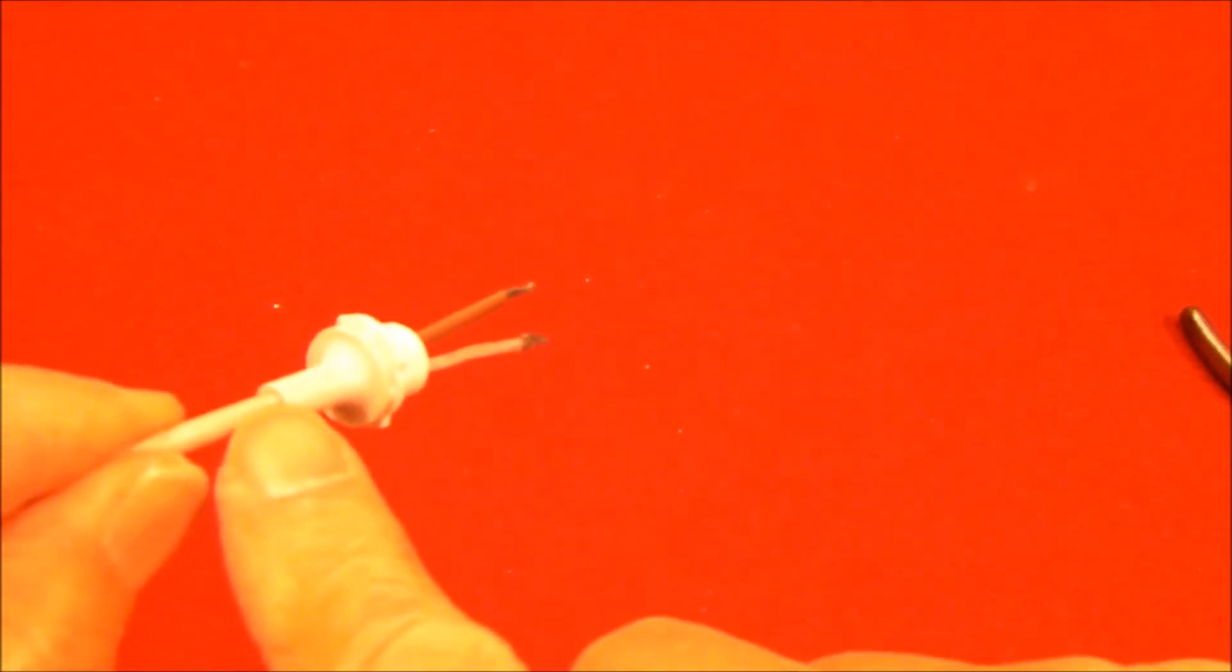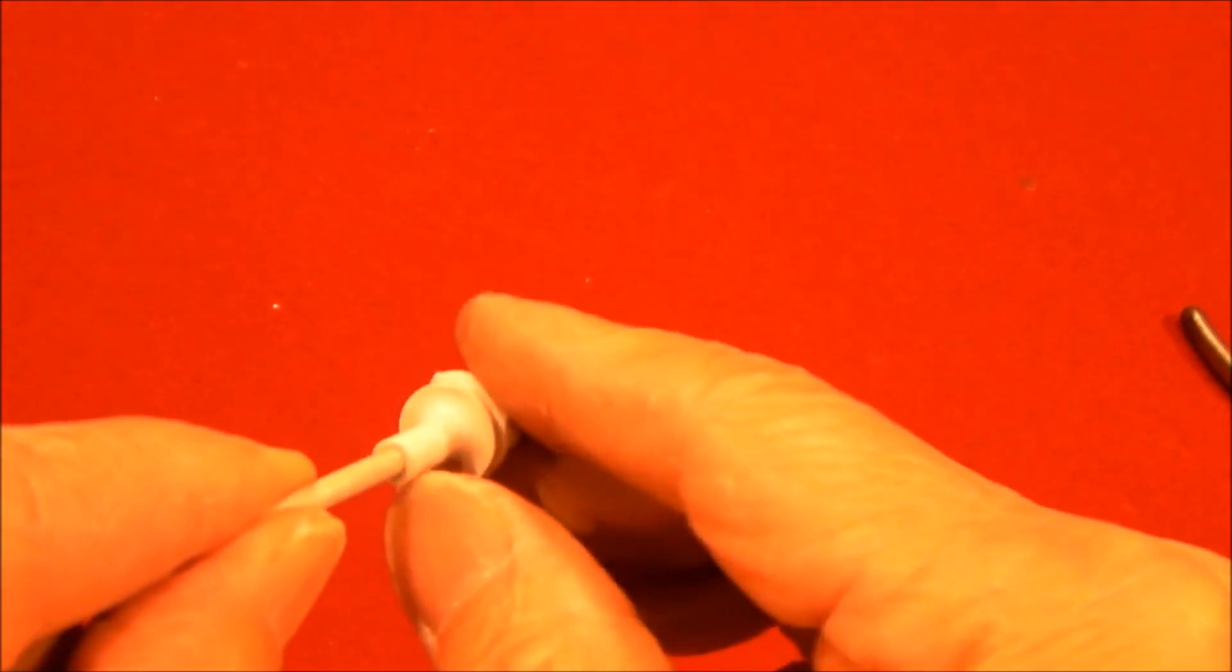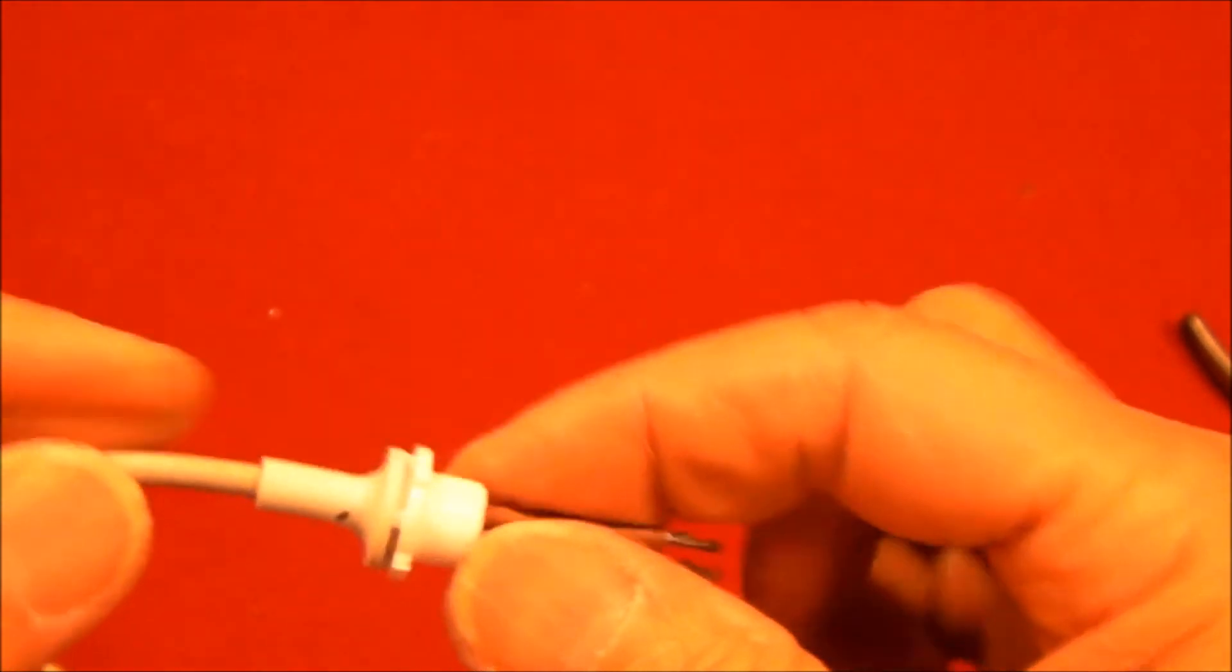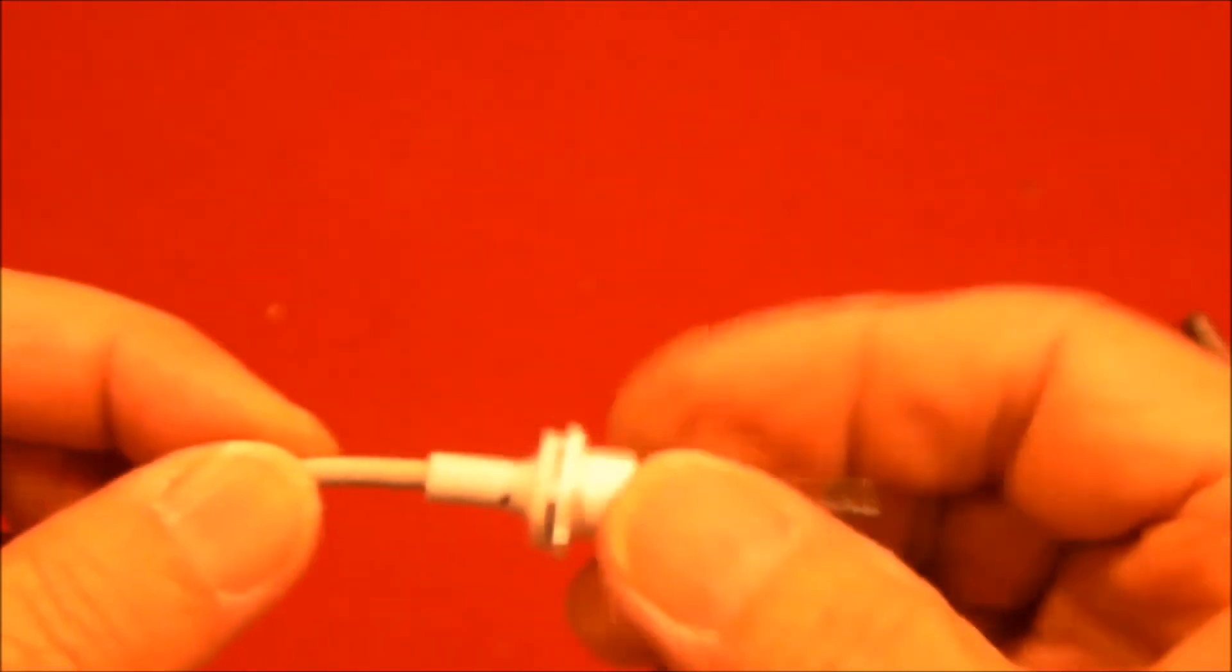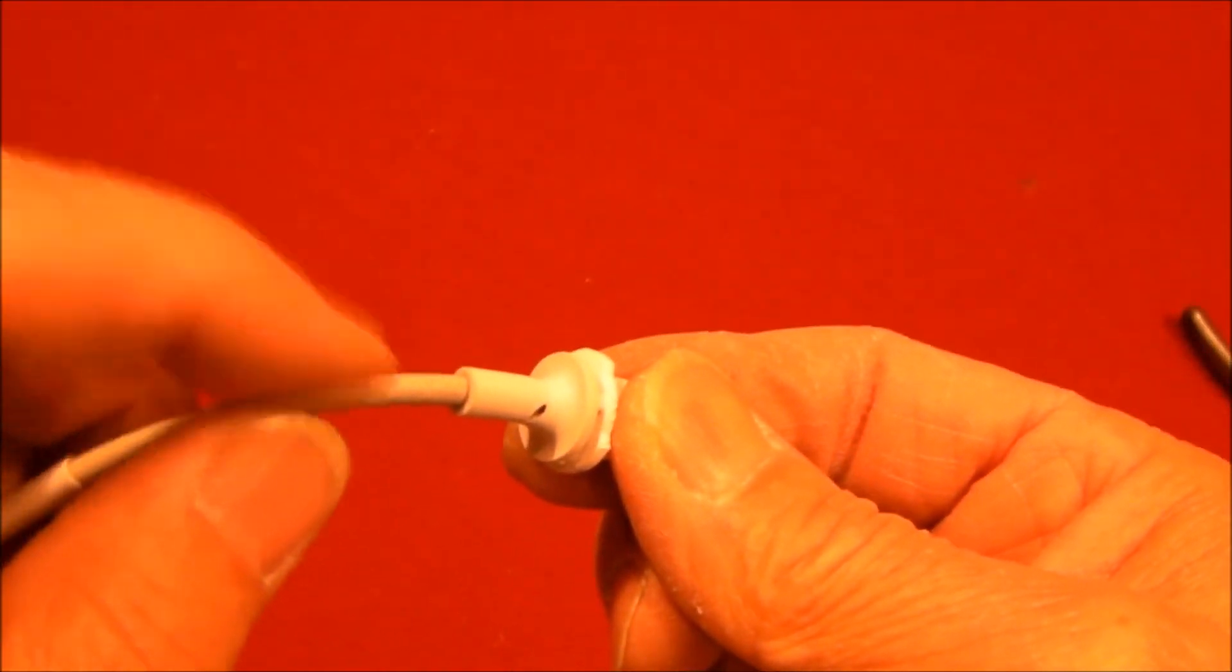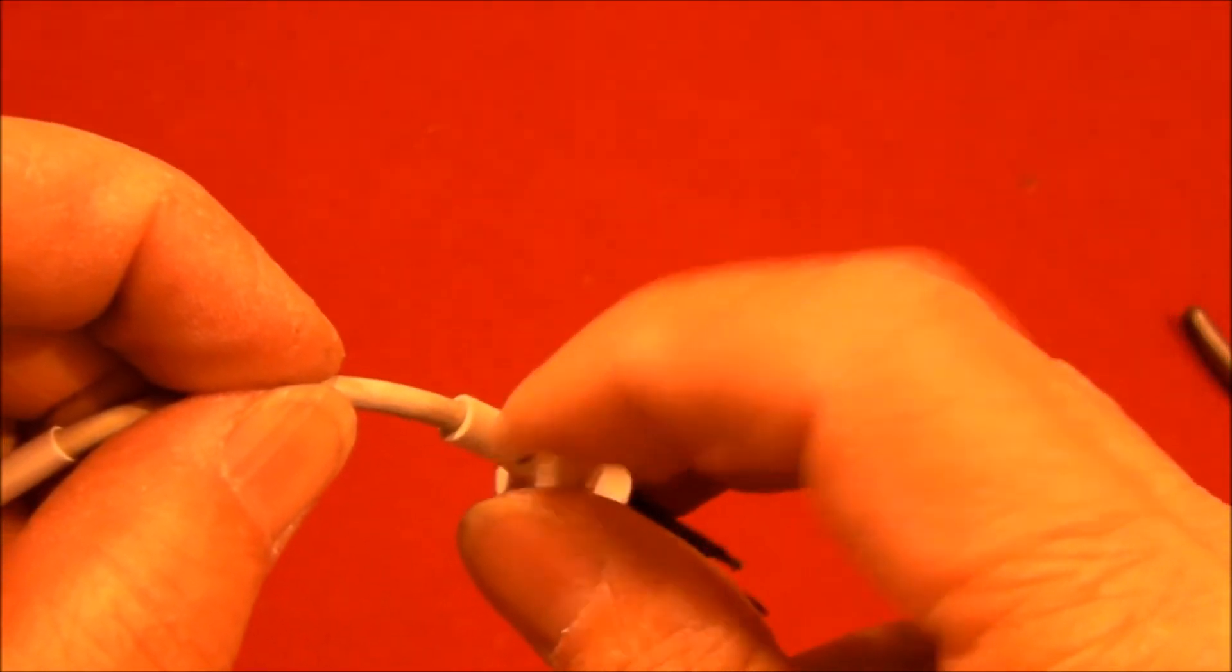One other tip. I put a little bit of super glue down inside this jacket before I slid this on. So there's some adhesive that's between the outer jacket of the cord and the inner hole here.